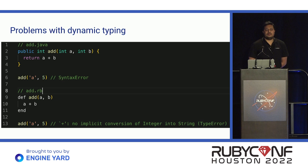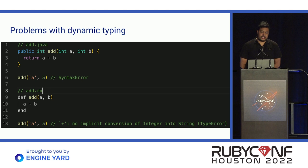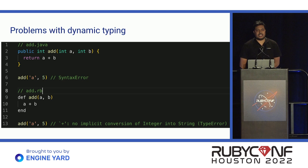What is the problem with dynamic typing? In Java, we have a simple add function accepting two integer arguments and returning their sum. If we try to pass string-type arguments, we get a syntax error. In Ruby, if we pass a string argument, it won't give us any error when writing the code, but it will give an error at runtime. These are the kinds of issues we face with dynamically typed languages. People say we can add extensive test code, but sometimes humans do make mistakes. To overcome these problems, static typing has been introduced.